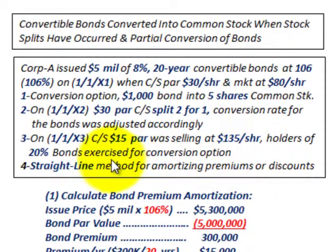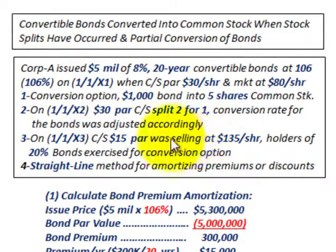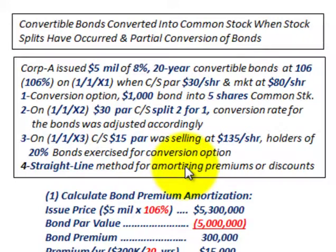When we do this amortization, we're not going to have to base it on any monthly allocation, because we're looking at this problem on a straight per-year basis. The bonds were issued on 11x1 and they'll be converted on 11x3, exactly two years later. We're not going to be dealing with any interest costs on these bonds — we're strictly going to be looking at issuing the bonds and then converting them.